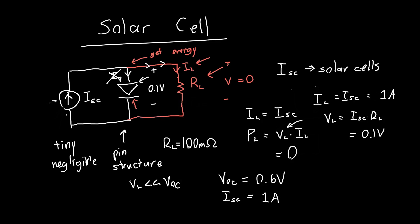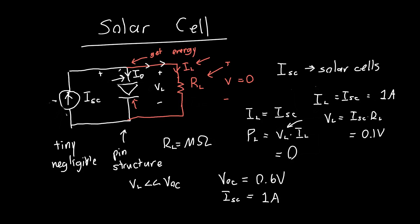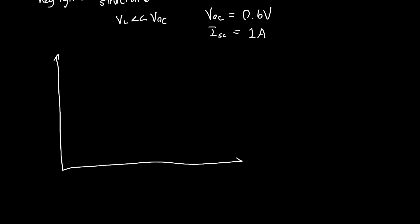As we start to increase the resistance — say to 500 milliohms — we get an appreciable voltage across the diode, and current starts predominantly flowing through it. As RL approaches infinity, such as several megaohms, almost all the current flows through the diode and the voltage across the load becomes just the open circuit voltage. So the IV characteristics for a solar cell look like just an upside-down diode.